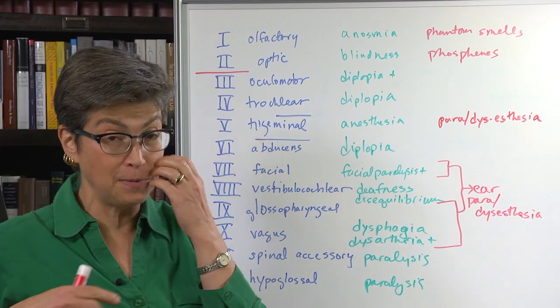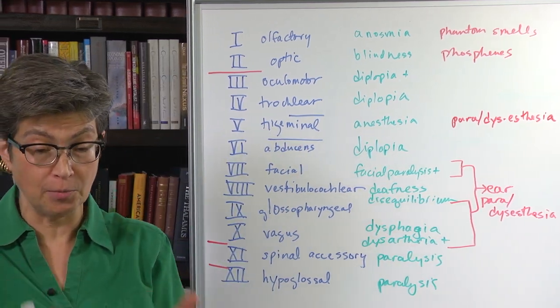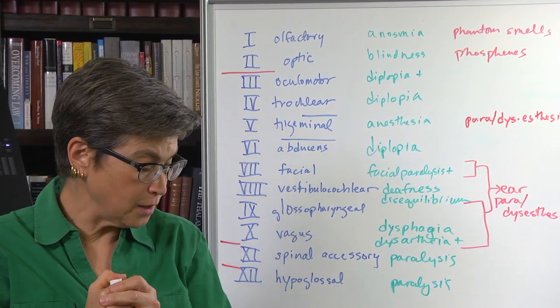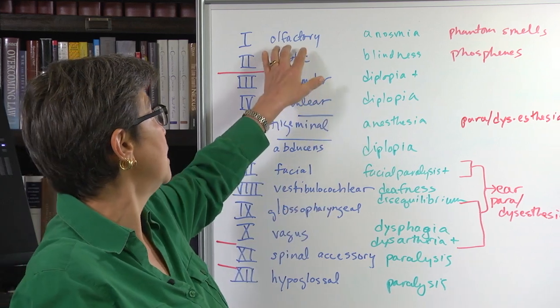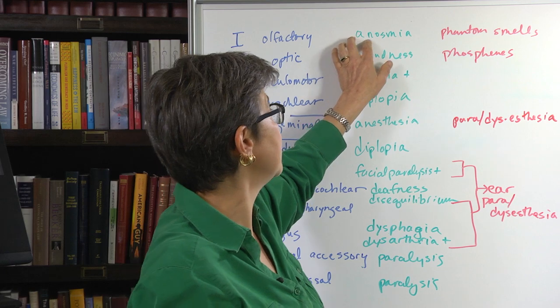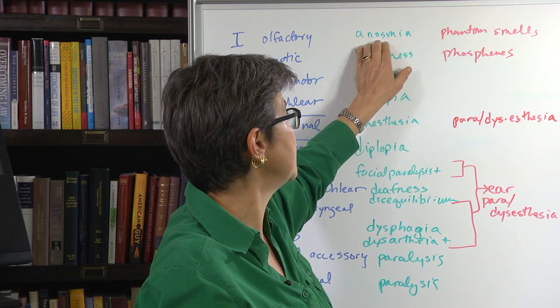And so one of the things that people do when they get a person into the emergency room that's had a whiplash type of experience is they'll test whether the person can smell. So if they cannot smell, this is a negative sign, it's anosmia.